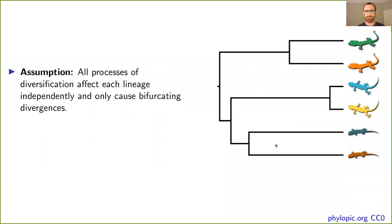We're going to start with an assumption that we make in phylogenetics. And that assumption is that all processes of diversification affect lineages independently. So what I mean by that is if we look at this ancestral species of lizard here, whatever process causes it to diverge at this point, we assume has no effect on any of the other lineages across the tree.